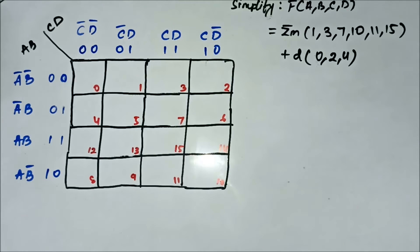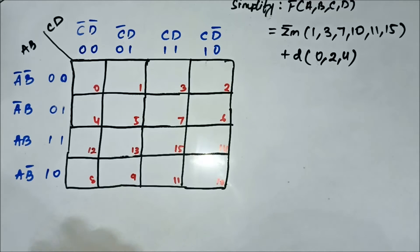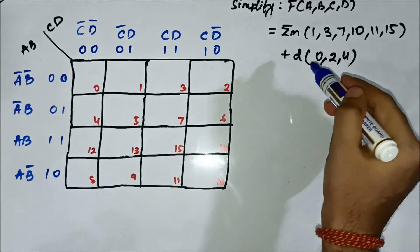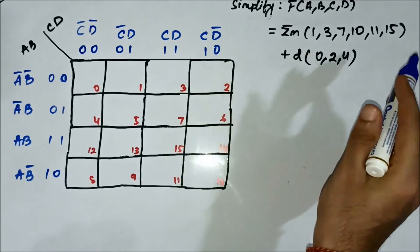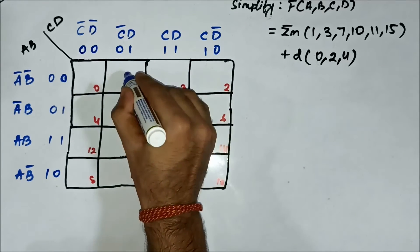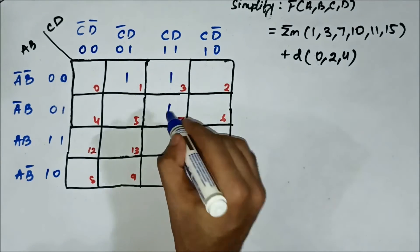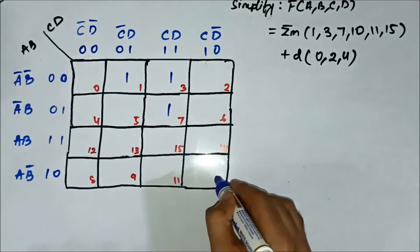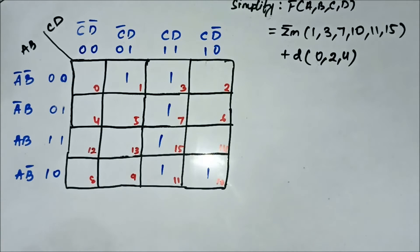Here we have another question on don't-care condition SOP K-map simplification. We have the min-term values and the don't-care values. The min-term values are marked as 1: so 1, 3, 7, 10, 11, and 15.